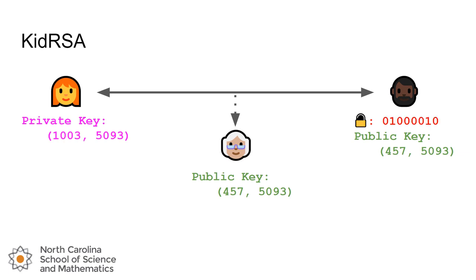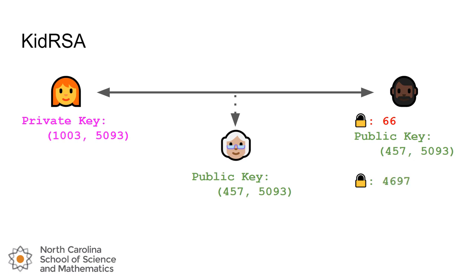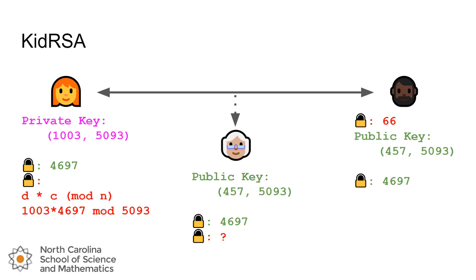Bob takes his message B, converts it to decimal using the ASCII table: that's 66. He encrypts by computing 457 × 66 mod 5,093, and gets the encrypted message 4,697. He sends that across the line — Eve can see it too. But Alice can take her private key 1,003, multiply it by 4,697, mod by 5,093, and recover the plain text 66 as a decimal, which she converts back to the character B using the ASCII table.